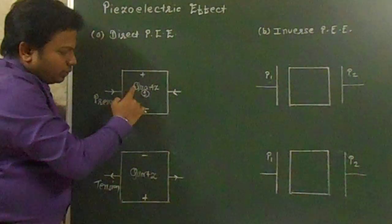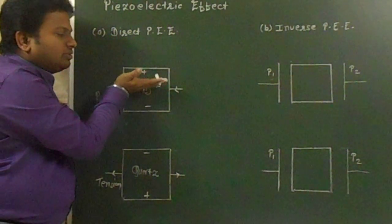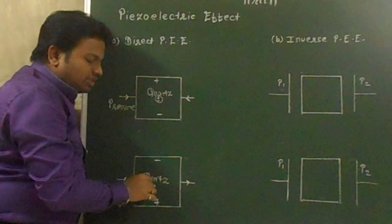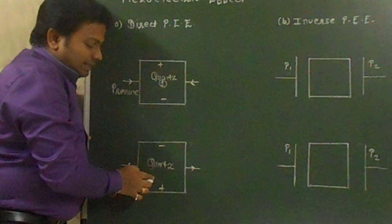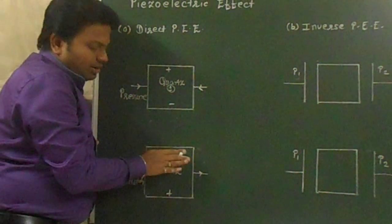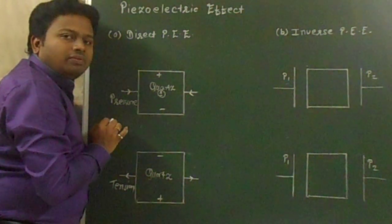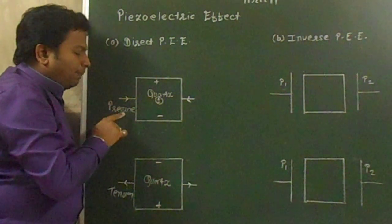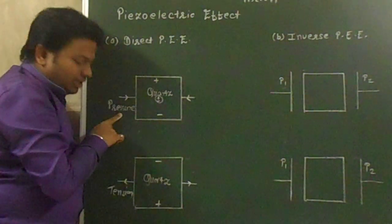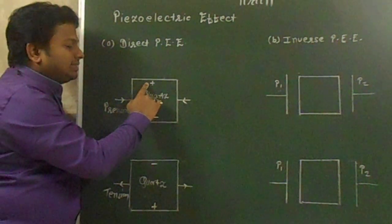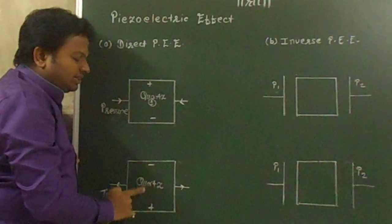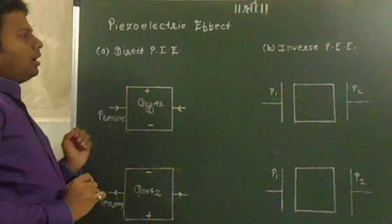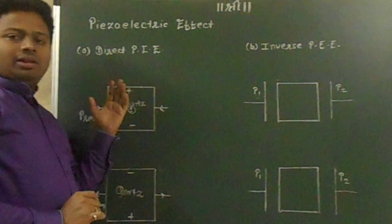The center of gravity of the positive charge and the negative charge will displace from their original positions. In the first case, the positive charge shifts upward and the negative charge shifts downward. Exactly the reverse happens in the second case — the center of gravity of the negative charge shifts up and the center of gravity of the positive charge goes down. So in the direct piezoelectric effect, we apply either a mechanical pressure or tension, and as a result a potential difference is developed, converting mechanical energy to electrical energy.